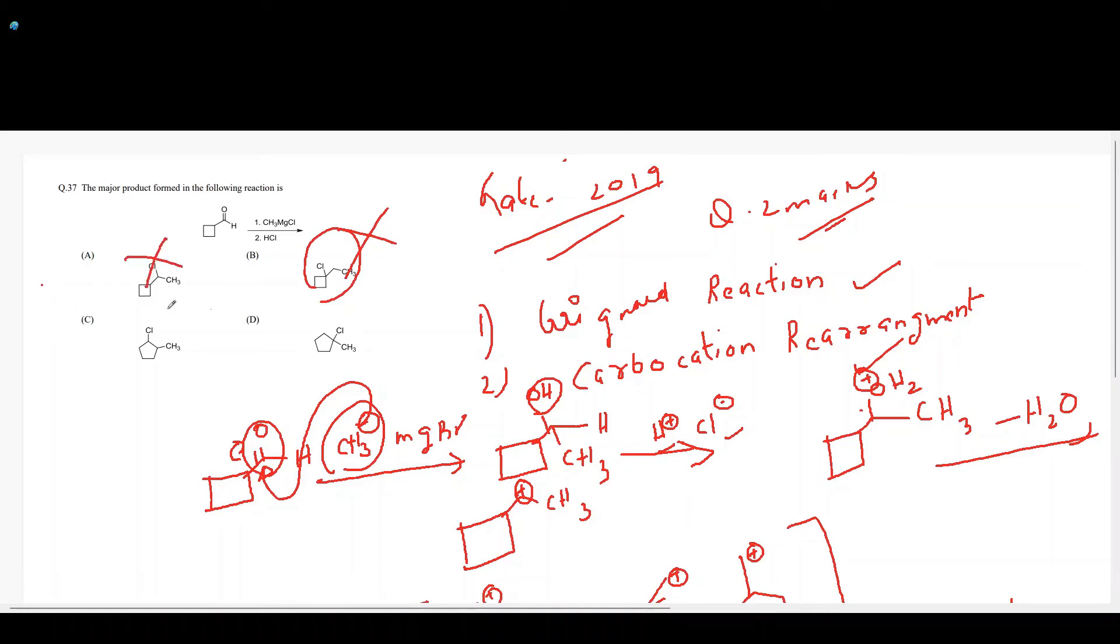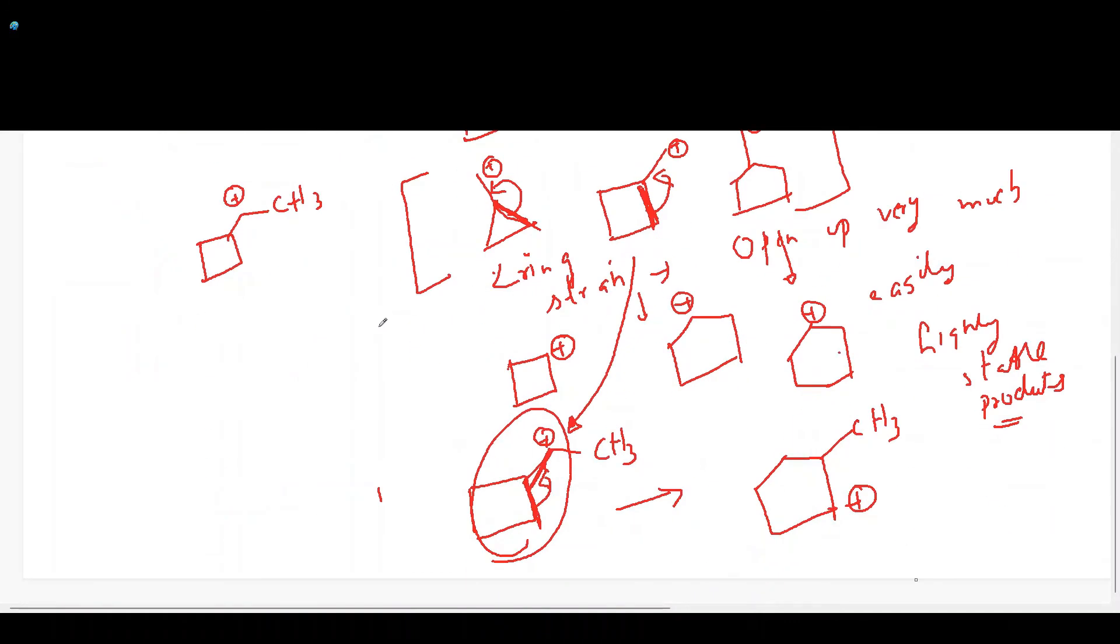From this we can say that neither this will form nor this will form, and this will definitely not form. We have only two options, one and two, either C or D.